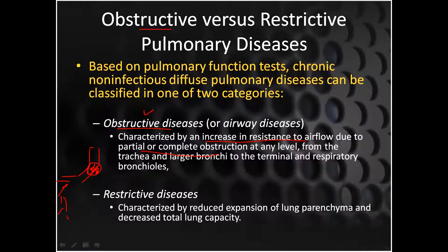As far as restrictive diseases are concerned, these are because of reduced expansion of the lung parenchyma. There is some problem in the lung parenchyma such that it is unable to expand. In fibrotic diseases, the lung parenchyma has been destroyed and replaced with fibrosis, so these are termed under the heading of restrictive diseases.